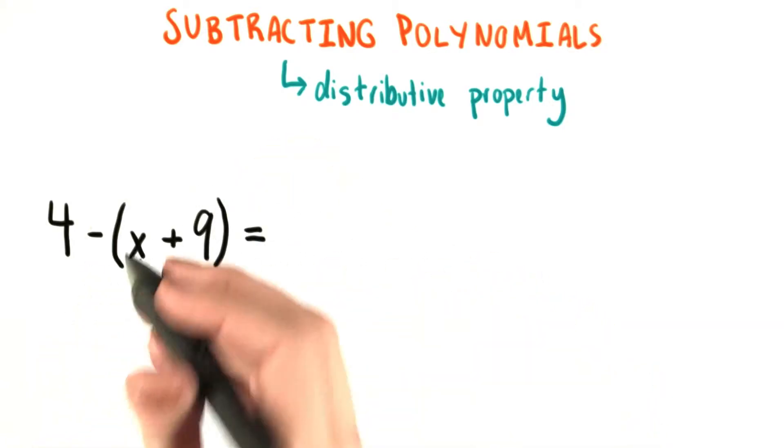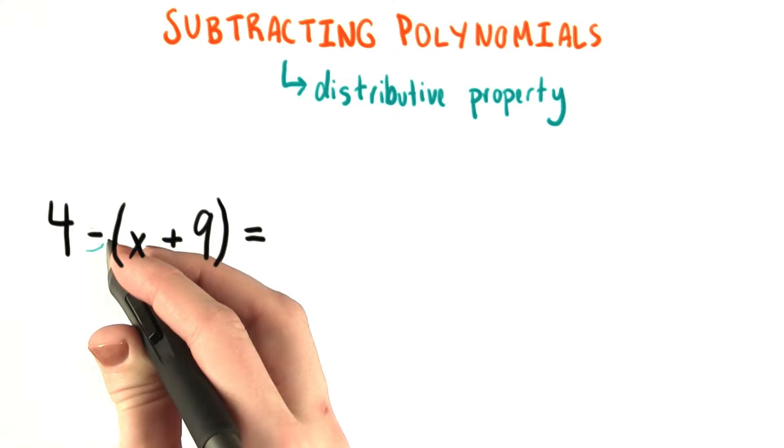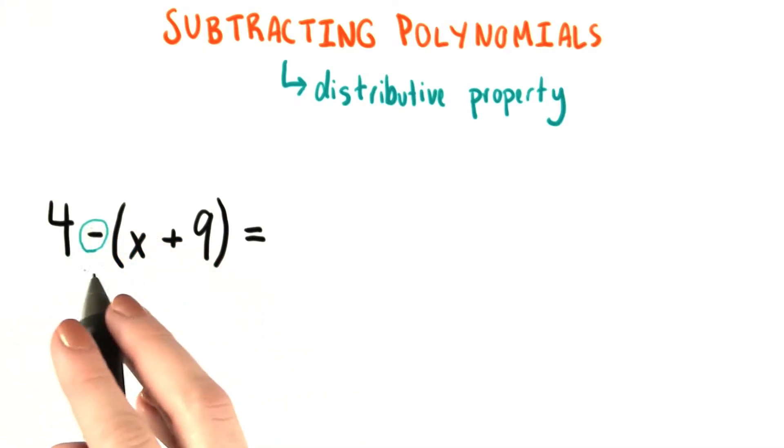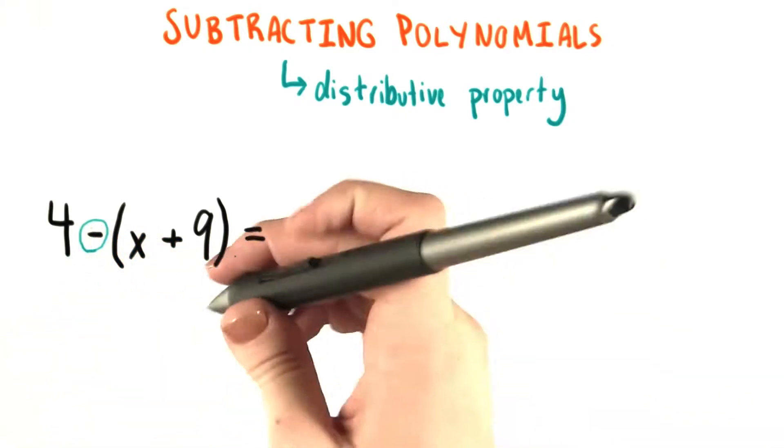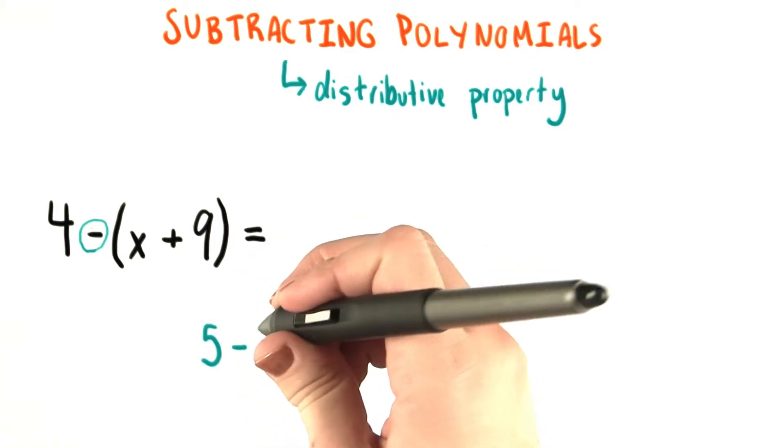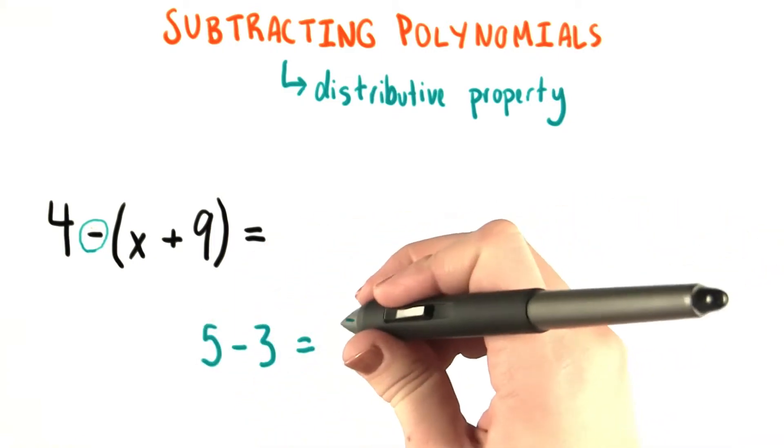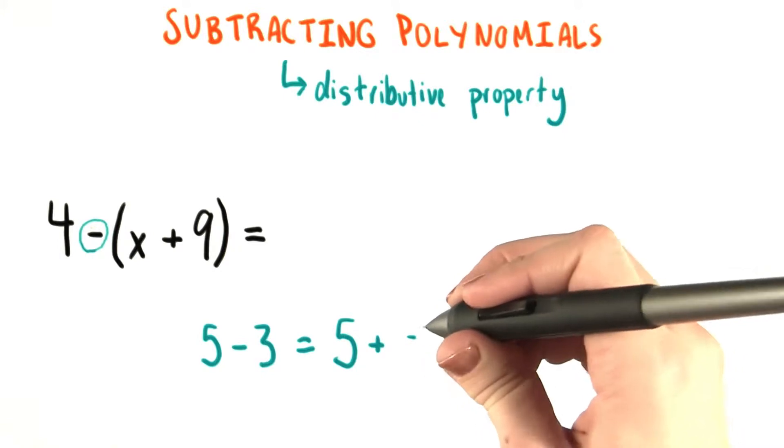First things first, we know that when we subtract, like we're doing here, that's actually the same as adding the negative of the thing that you want to subtract. So for example, if we have 5 minus 3, that's actually equal to 5 plus negative 3.